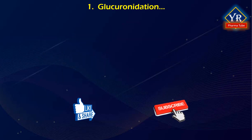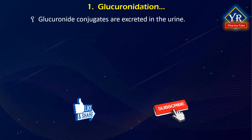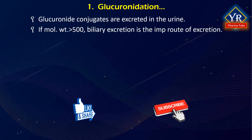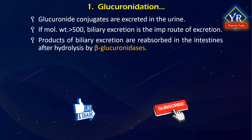All the above glucuronide conjugates are primarily excreted in the urine. However, as the molecular weight exceeds 500, biliary excretion may become an important route of elimination. Products of biliary excretion are deposited in the duodenum and may be excreted in the feces or reabsorbed by the intestines through enterohepatic recycling after hydrolysis by beta-glucuronidases present in the intestines.